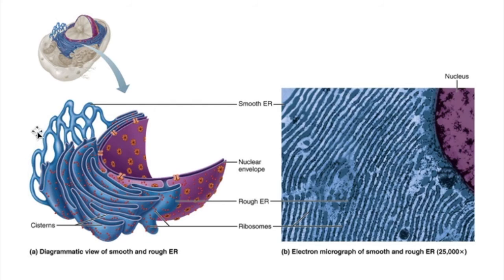The SER also stores structures called glycogen in the liver's hepatocytes. Glycogen is a compact form of sugars that provides a ready-release supply of sugar during periods of fasting. You have glycogen in your liver and the SER can release those stores. So basically, the SER is storage.